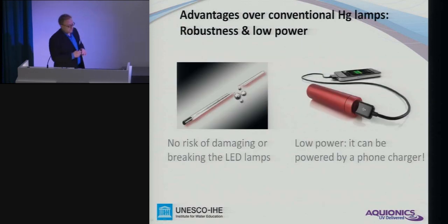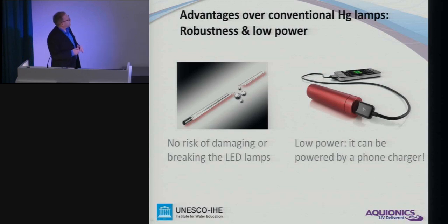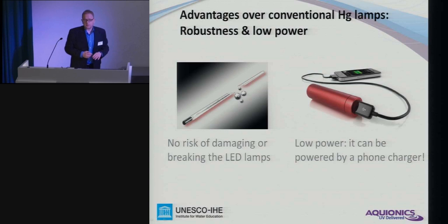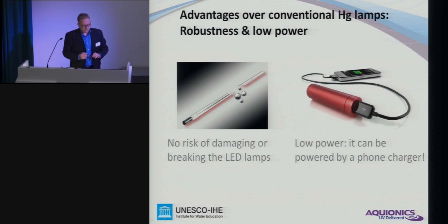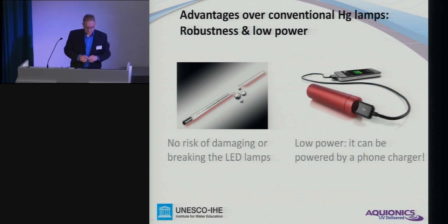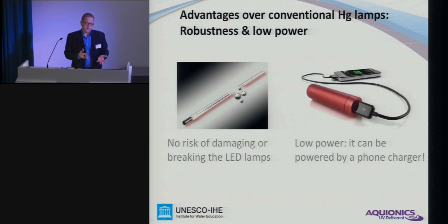With other advantages over mercury-based lamps, we have no risk of damaging or breaking the lamp. A mercury spill kit, as found today with every water treatment works, is not necessary anymore. The power consumption for individual LEDs is very low — you can charge them with your phone charger if you have the right connection. The lamps are operated on 6 to 30 volts DC, so operation with solar power or battery power is a realistic option with LEDs.